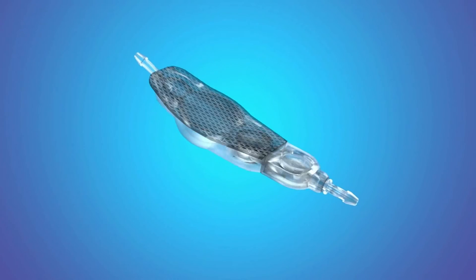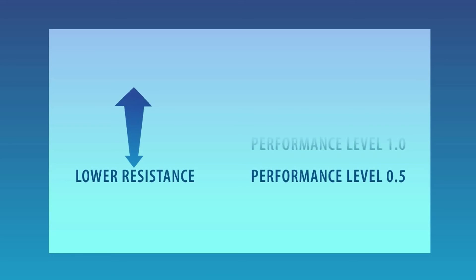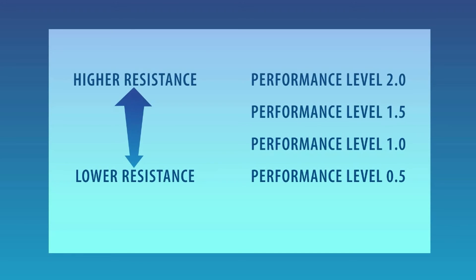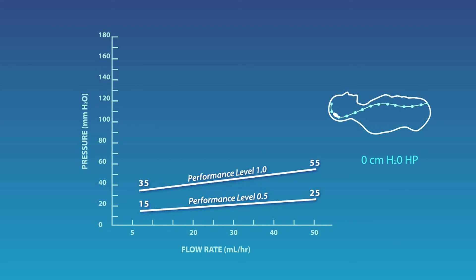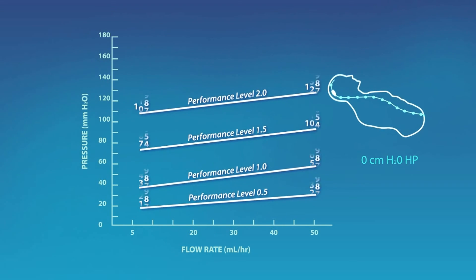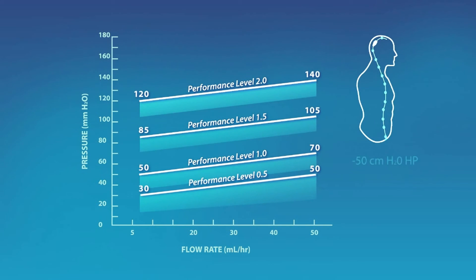The Delta Valve has four performance levels which directly correlate to the valve pressure flow rates: 0.5, 1.0, 1.5, and 2.0. These numerical descriptions are synonymous with valve pressure ranges from lower to higher resistance. As shown by the performance level chart, the Delta Valve system maintains a consistent pressure gradient regardless of flow rate or patient posture.